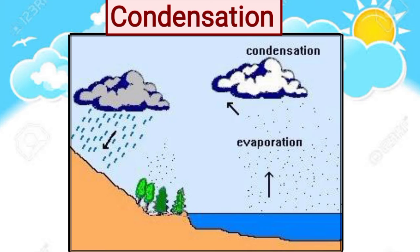Now let's understand condensation. When we boil water in a pan and cover it with a lid, we find tiny droplets of water on the underside of the lid. These drops form because water vapour has changed into water — this process is called condensation. Clouds are formed when water vapour condenses into tiny water droplets. Bigger water droplets fall as rain. On cold winter mornings, we see droplets of water on grass and leaves, which is called dew, and these droplets are formed by the condensation of water vapour in the air.